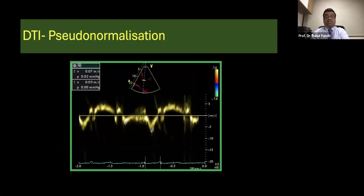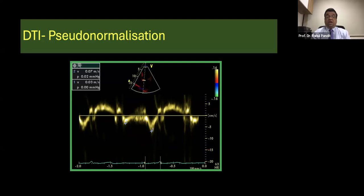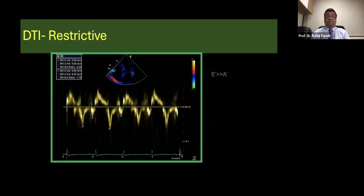Similarly, pseudonormalization, what would happen is in a pseudonormalization, you would have a normal E wave and a normal looking A wave. Here you still have a smaller E dash and a bigger A prime or A dash. So you actually have a pattern which you would have normally had to do Valsalva maneuver. Here you can see that the velocities are reversed and you can see a bigger velocity here for the E and A and that's what actually diagnosed you the tissue Doppler imaging would diagnose pseudonormalization fairly well.